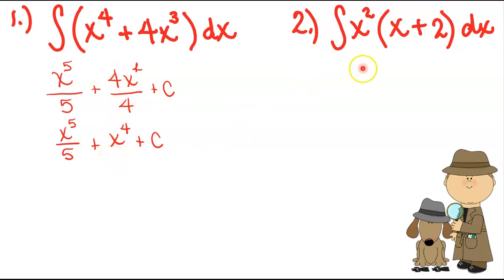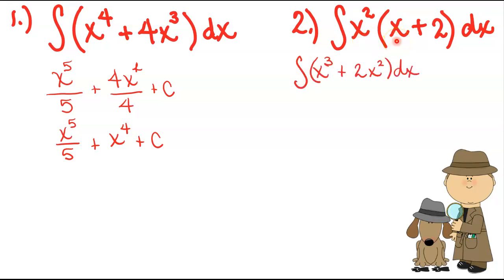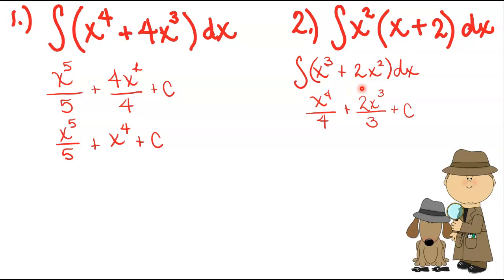We do not have a product rule or a quotient rule for antiderivatives. That means that if you have a product like we do here, there has got to be a way that you could simplify that before you do the antiderivative. So for this one, we could distribute that x squared: x squared times x would be x cubed, and x squared times 2 would be 2x squared. Now we're right back to taking the antiderivative like normal — add one to our exponent, divide by that same value, and don't forget your plus c at the end.